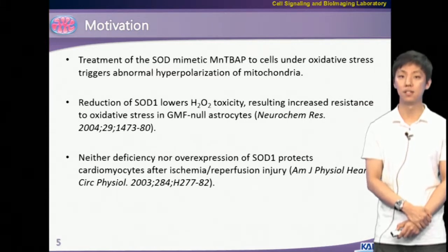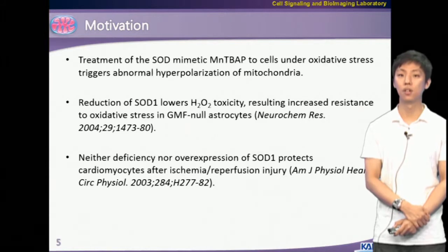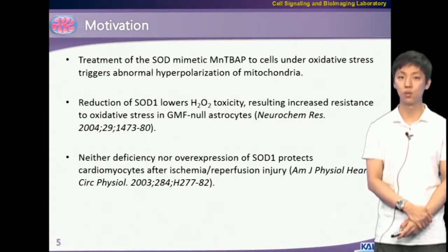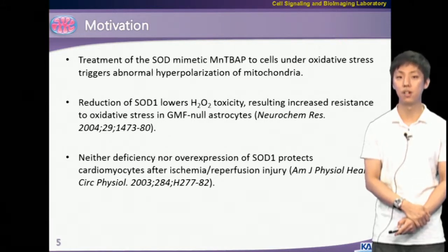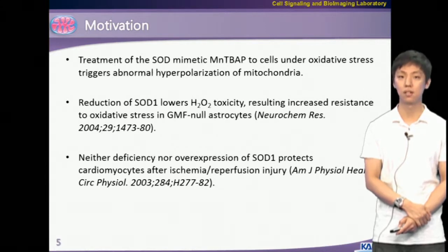In cardiomyocytes, intracellular ROS propagation involves strongly reactive superoxide as the main messenger molecule. For neurons, however, conflicting studies have reported that overexpression of SOD, which is a specific antioxidant for superoxide, could aggravate oxidative stress-mediated neuronal cell death. Our experimental results also show that treatment of cells with SOD mimetic MNTBAP under oxidative stress triggers abnormal hyperfusion of mitochondria. Also, reduction of copper zinc SOD is known to lower hydrogen peroxide toxicity, resulting in increased resistance to oxidative stress in astrocytes.